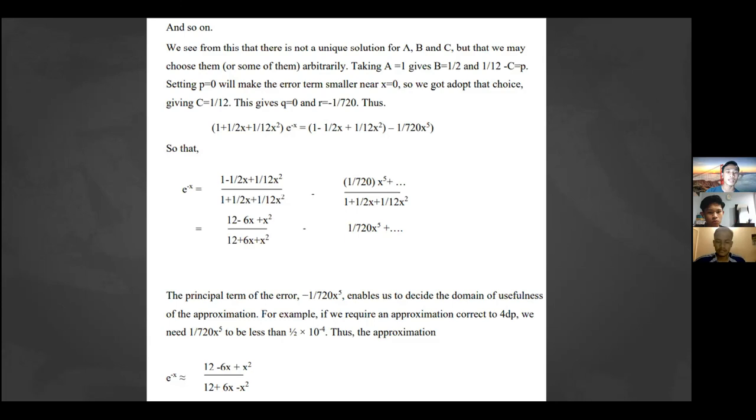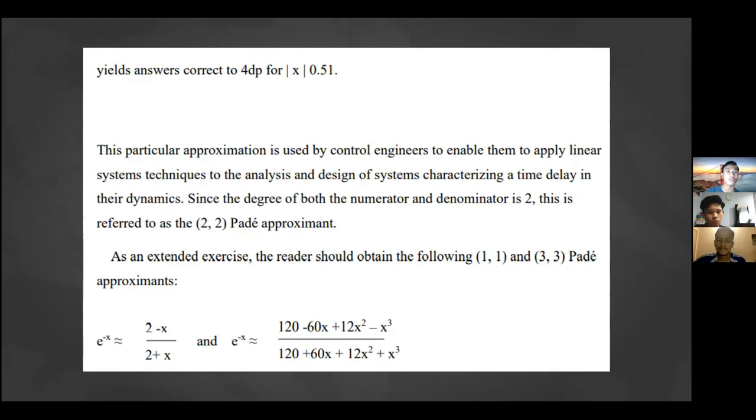From that equation, it yields answers correct to four decimal places for |x| < 0.51. I will continue the presentation.